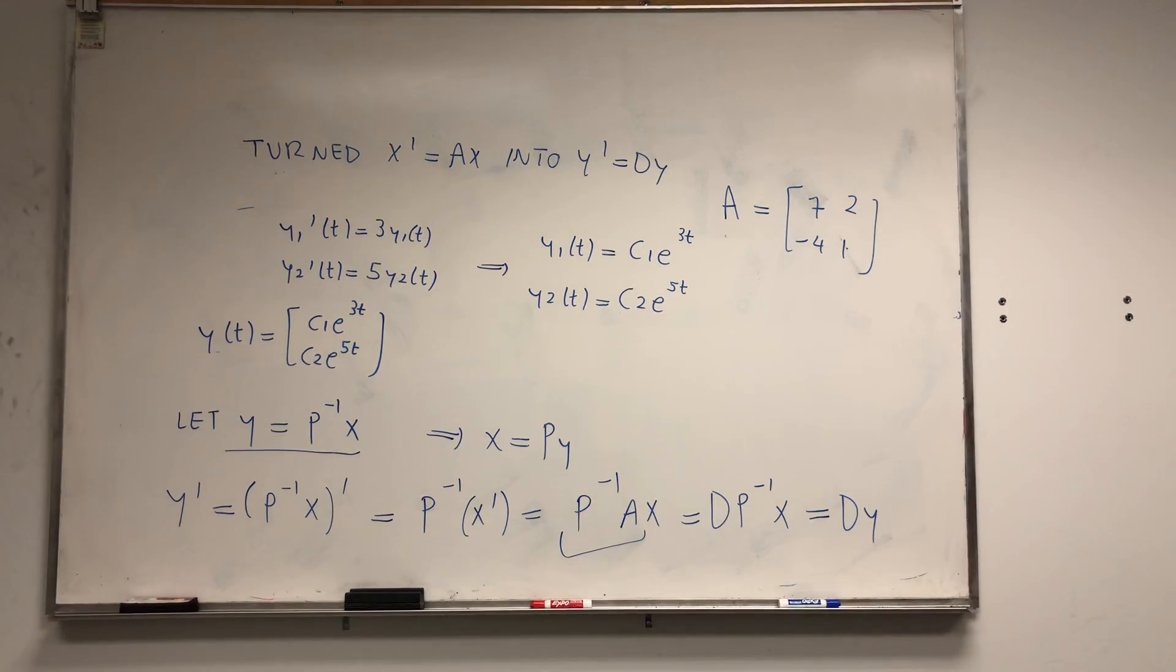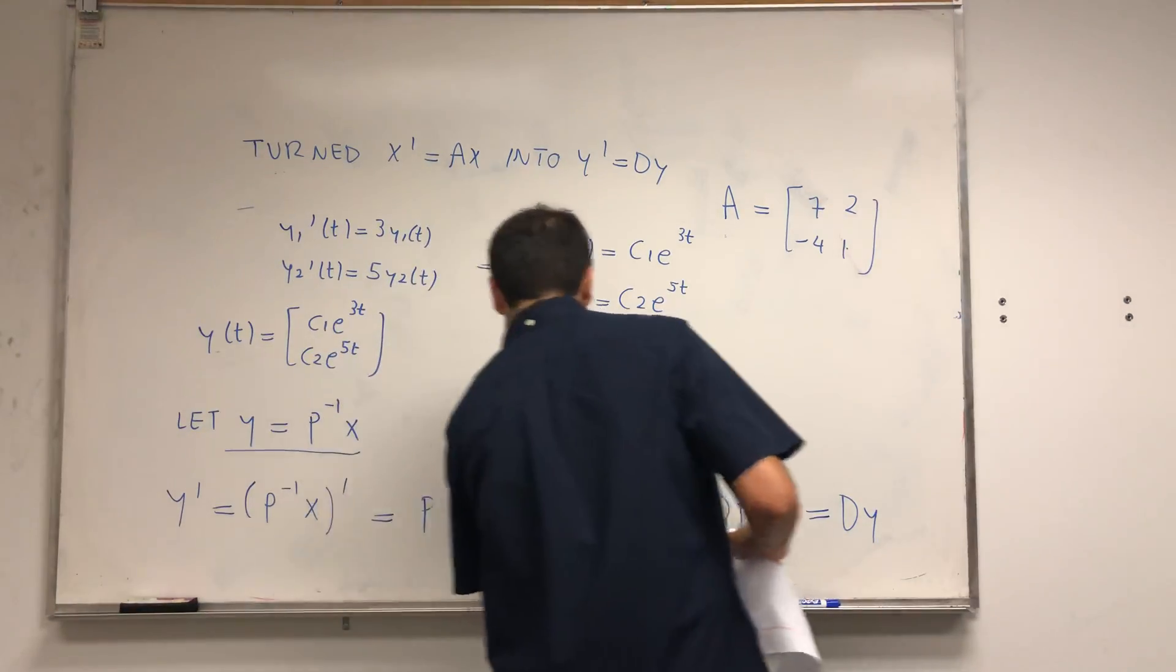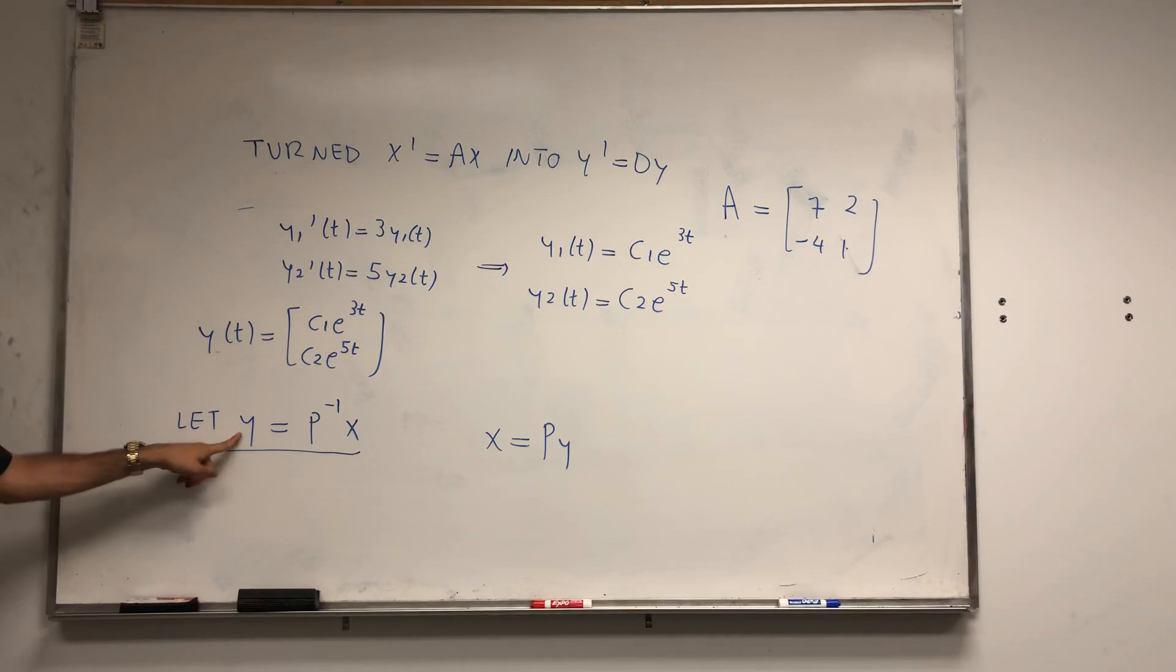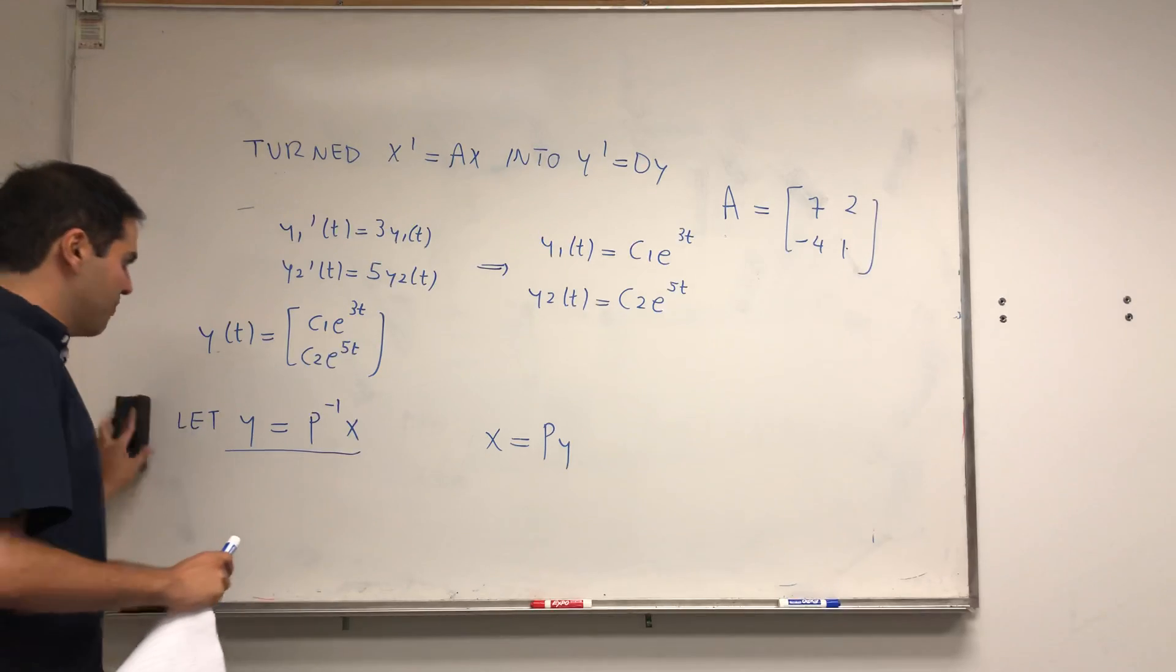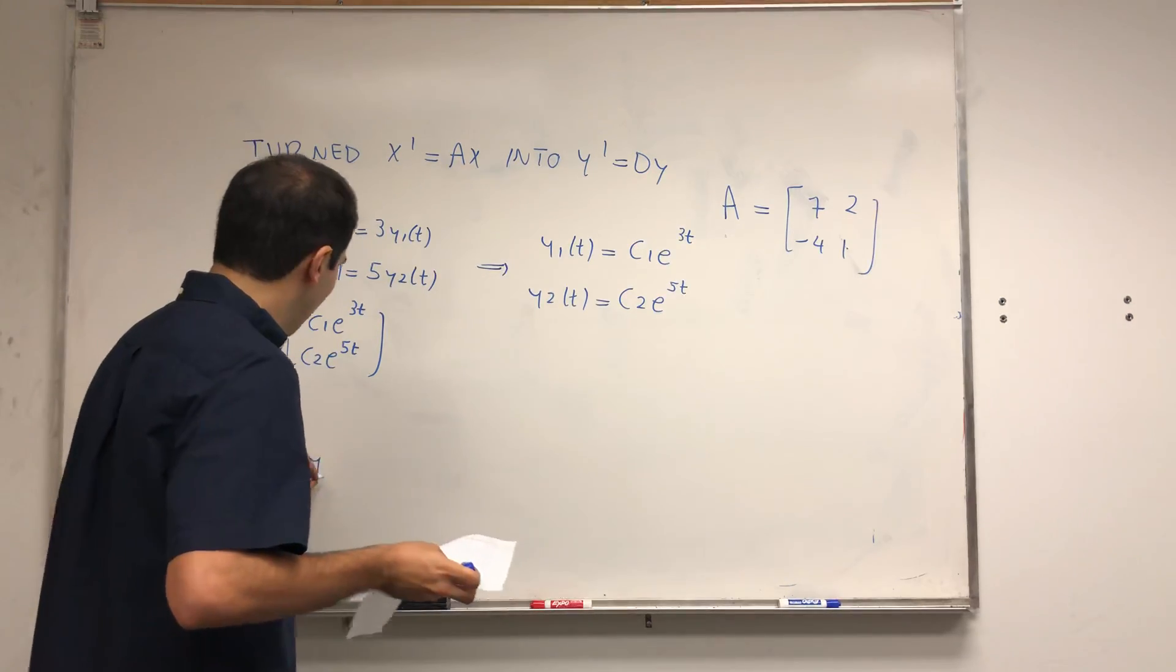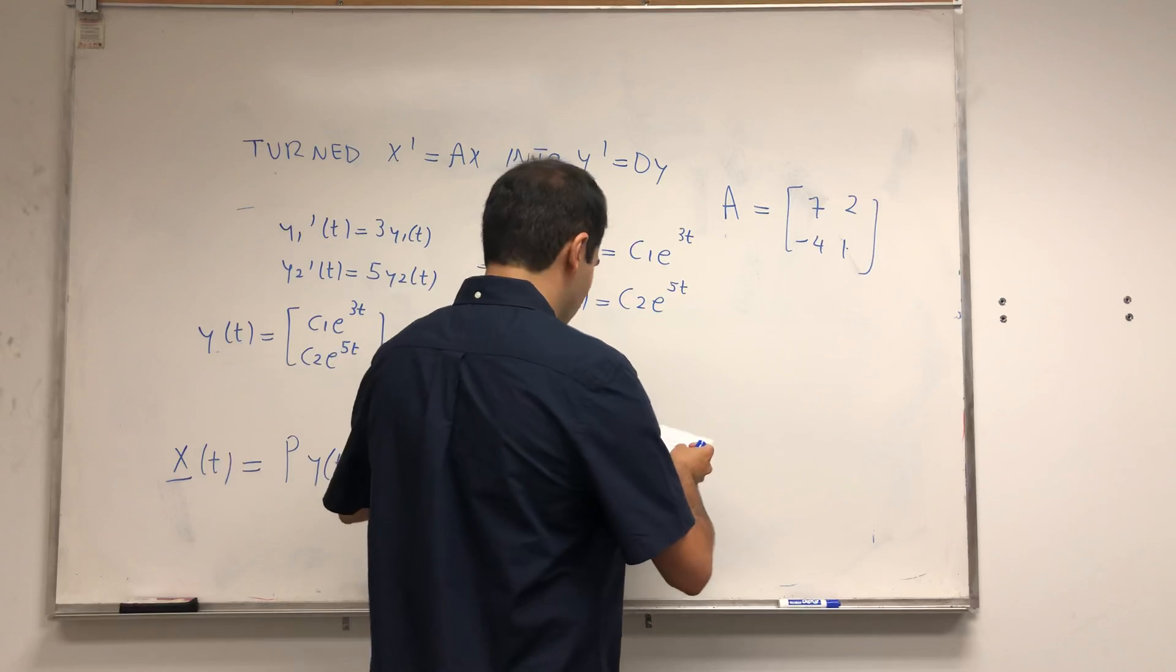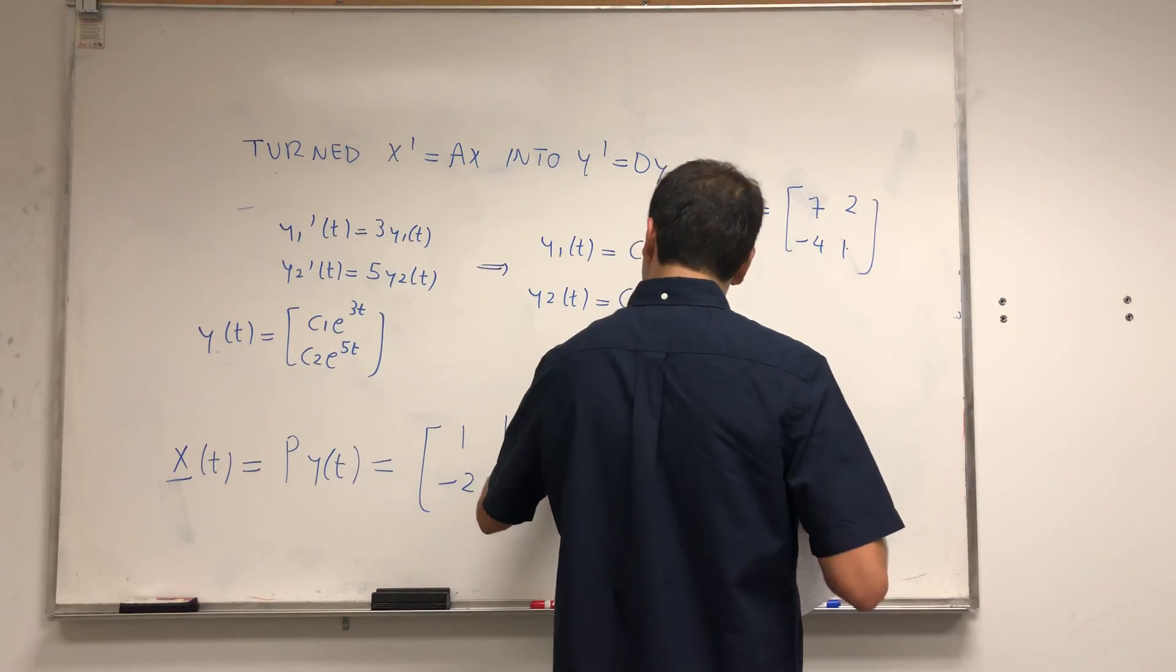The question is, how can we get our original solution x back? Well, it's actually written on this blackboard. Remember that y is P inverse of x, so x is in fact Py. So the original solution is x of t equals P times y of t.